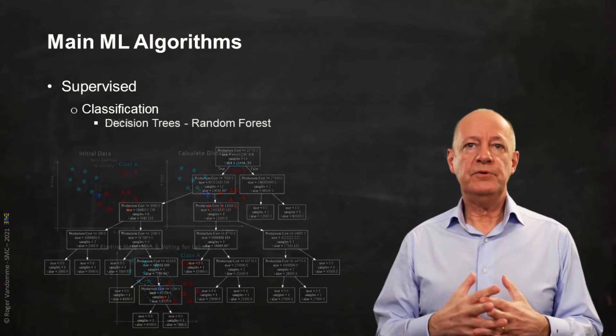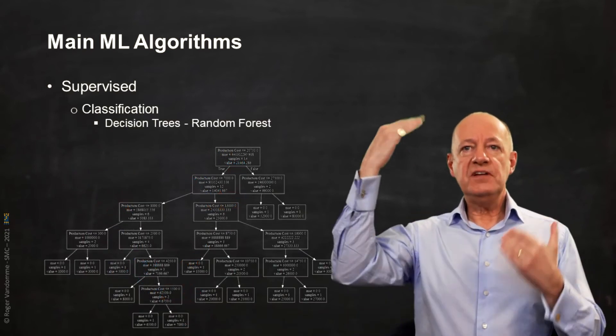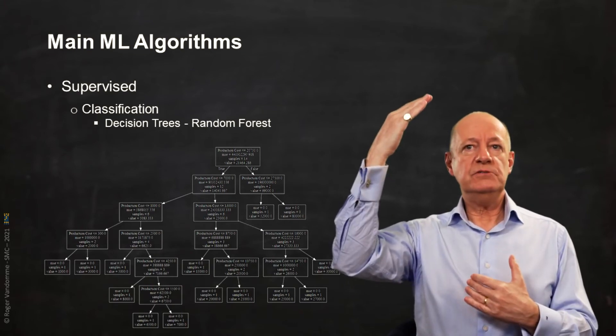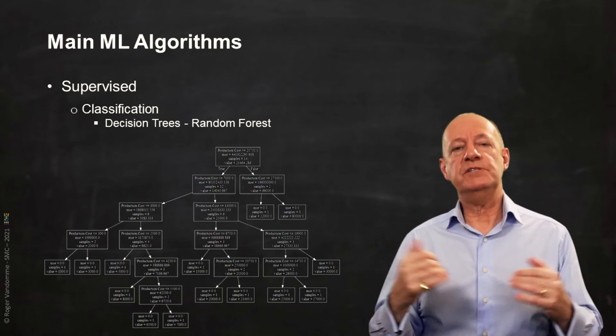If KNN is the simplest, decision trees are the most popular. Indeed, they are easy to explain. We start from the general population, which we divide gradually according to variables and separation thresholds.